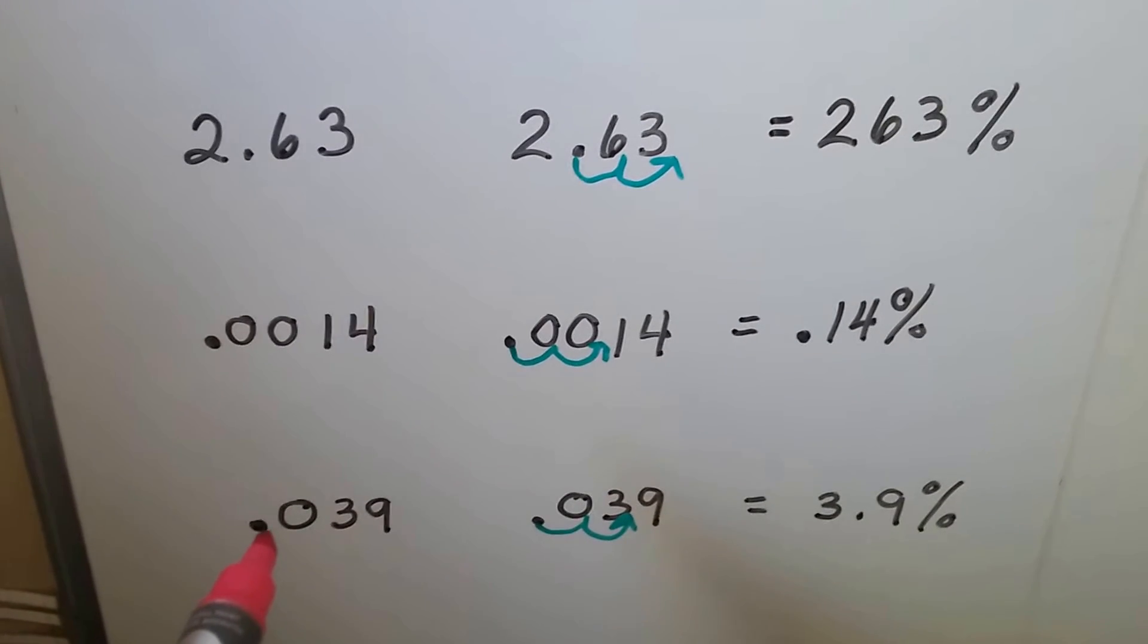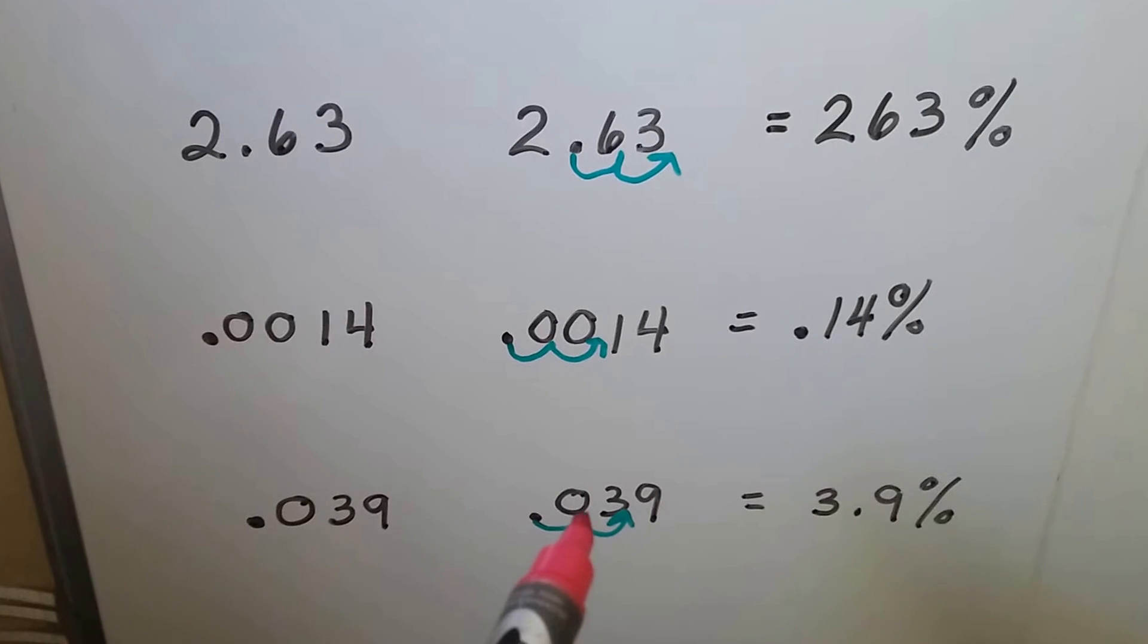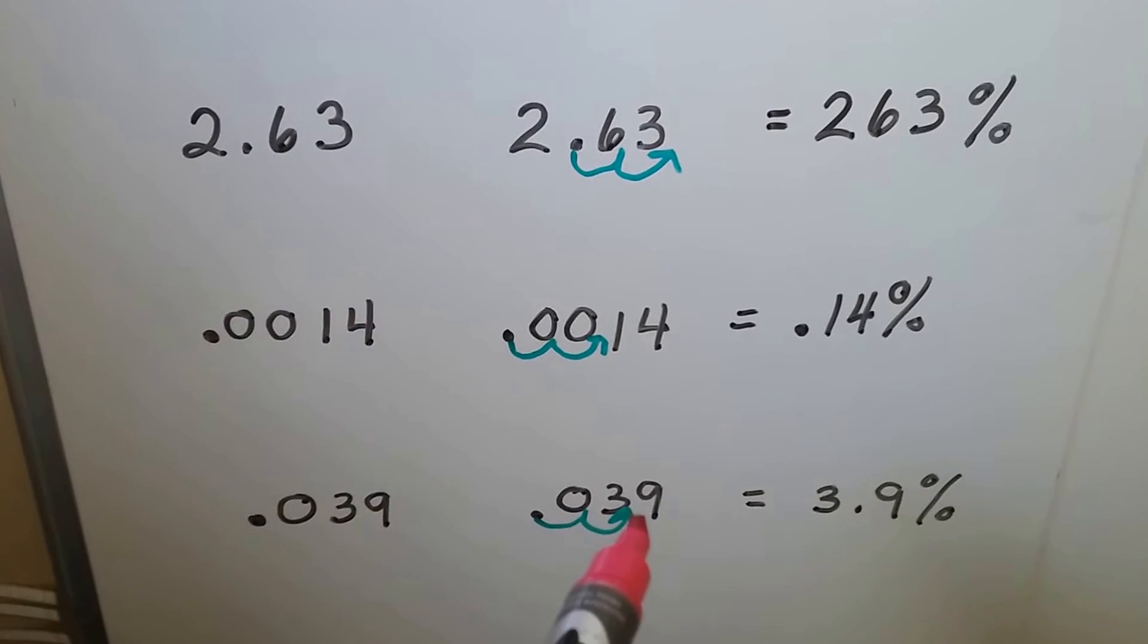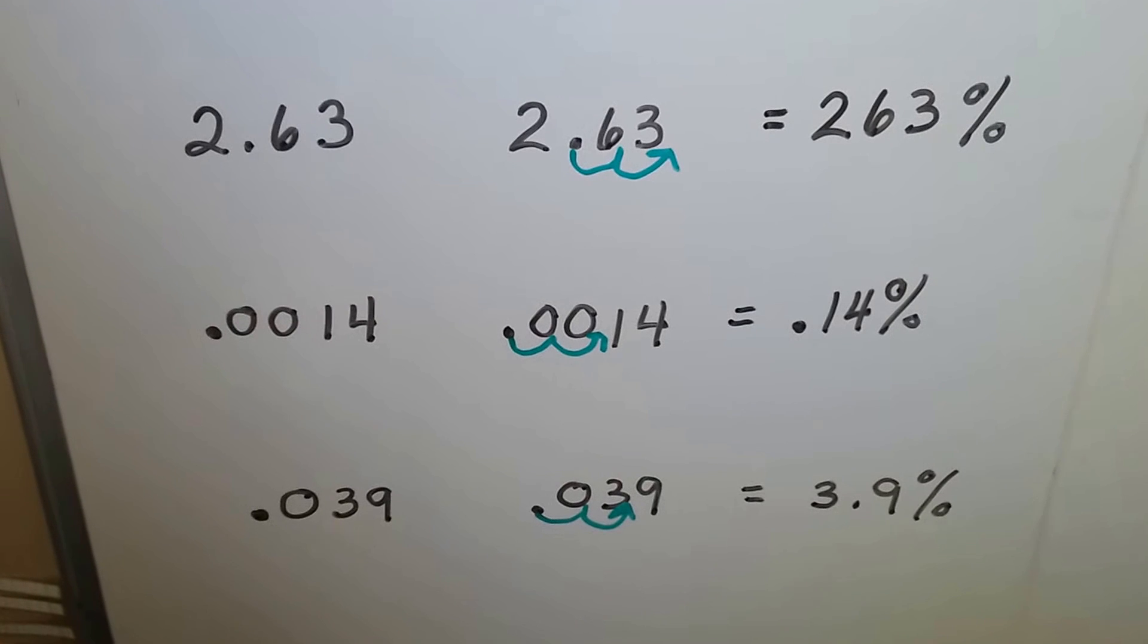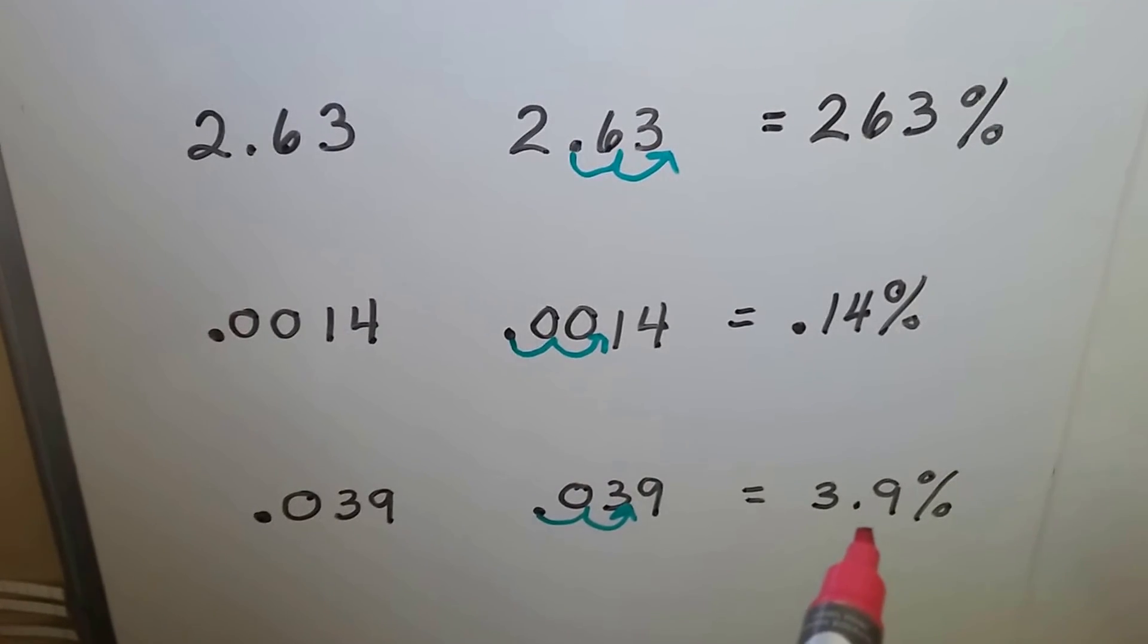Here, we move it over two hops, so it's going to go in between the zero and three, and then the three and the nine, and it stays there. We have 3.9 percent. That would be almost 4 percent.